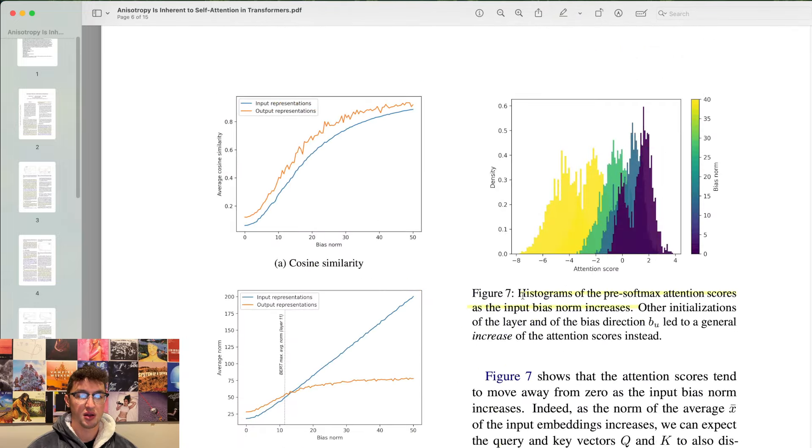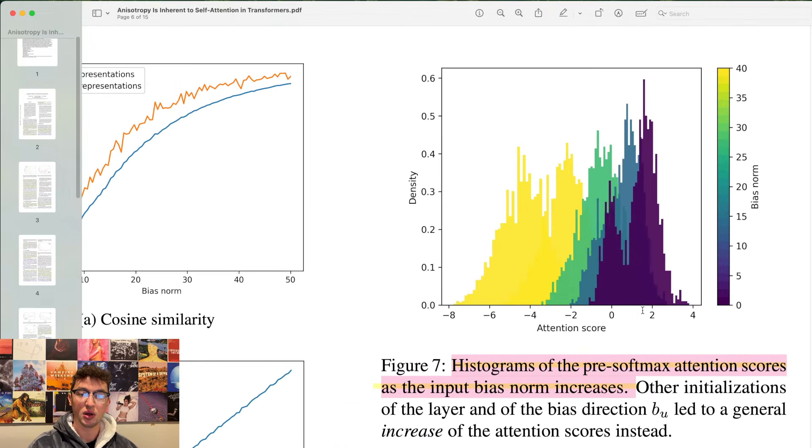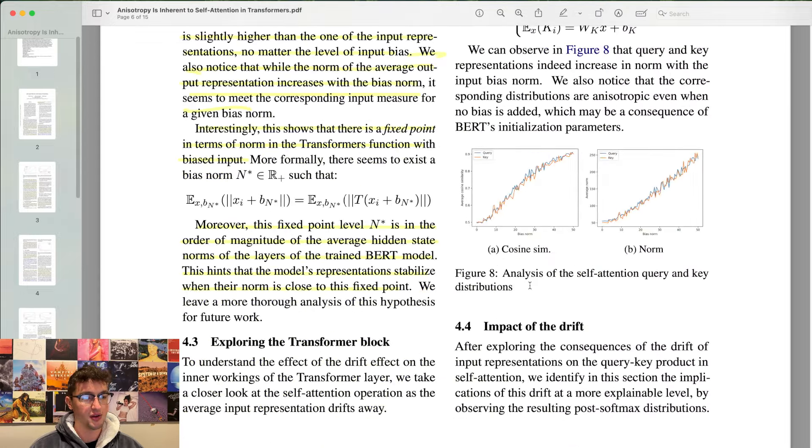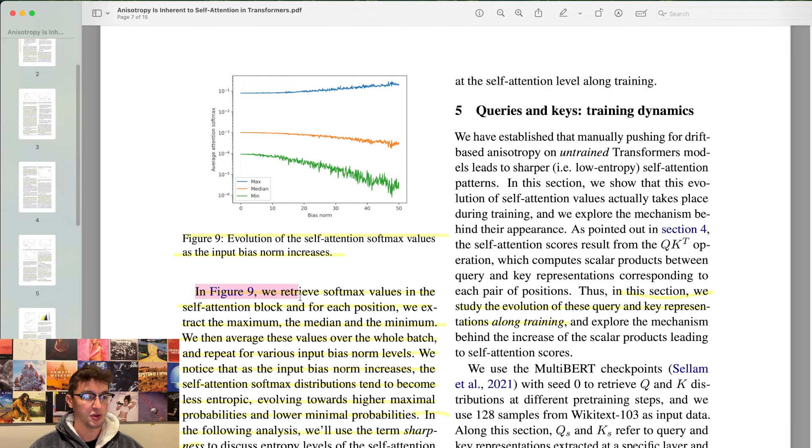Moreover, this fixed point level is in the order of magnitude of the average hidden state norms of the layers of the trained BERT model. This hints that the model's representations stabilize when their norm is close to this fixed point. Here is histograms of the pre-softmax attention scores as the input bias norm increases. Blue is low input bias norm. Yellow is high. We're just artificially messing with this bias term and raising it to see what happens. The attention scores get more widely distributed and more negative as the bias goes up. So it's almost like the ones that have a lower magnitude are paid more attention to. Maybe not sure this paper. I'm not fully sure what's happening here.